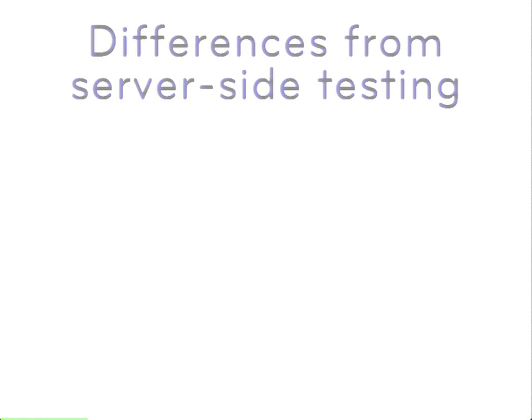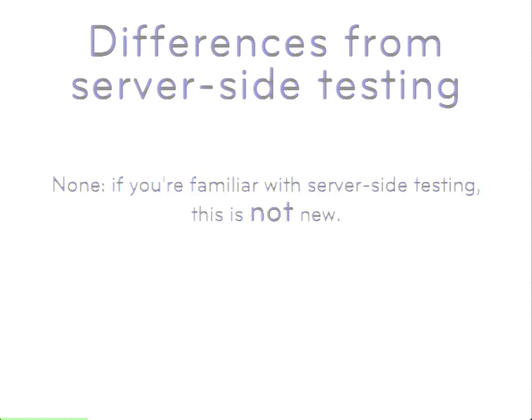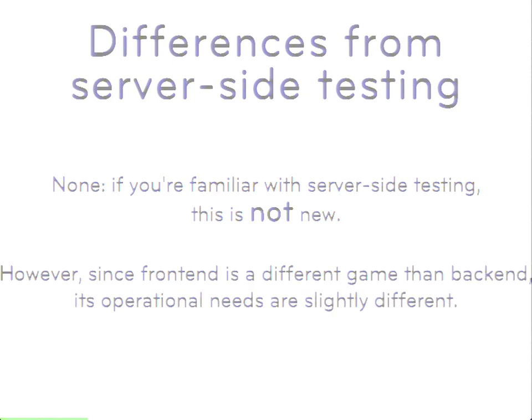So, the differences from server-side testing. We're going to talk about testing the front-end. That front-end might be Drupal, or it might be a layer that sits in front of Drupal. At 4Kitchens we do a lot of work with decoupled systems — we'll build a Node front-end that serves the website, but Drupal is the content management system behind it. So all these things that happen on server-side testing have to happen on the front-end too. If you're familiar with server-side testing, a lot of this won't be new to you.